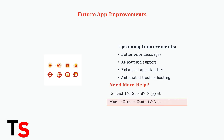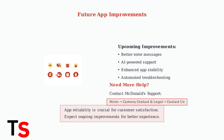If problems persist, contact McDonald's customer support through the app. Navigate to More, then Careers, Contact, and Legal, and select Contact Us for direct assistance. App reliability is crucial for customer satisfaction, so expect ongoing improvements to make your McDonald's mobile ordering experience smoother and more dependable.